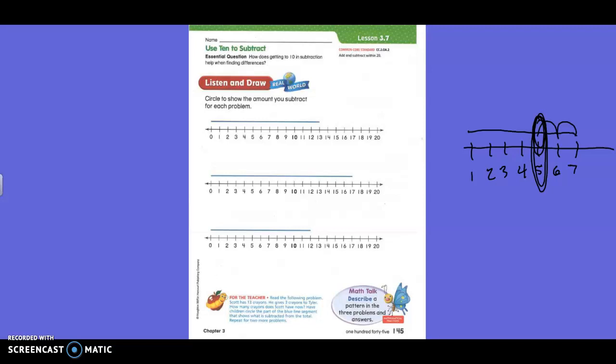So today I'm going to give you a story problem, and you're going to show how they are subtracting by circling things. So the first one, Scott has 13 crayons. He gives 3 crayons to Tyler. How many crayons does Scott have now? So we have to take away 3.